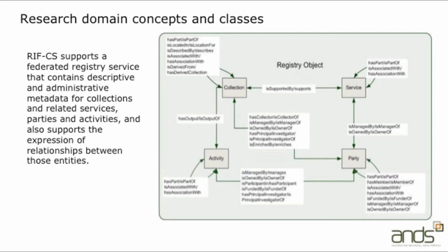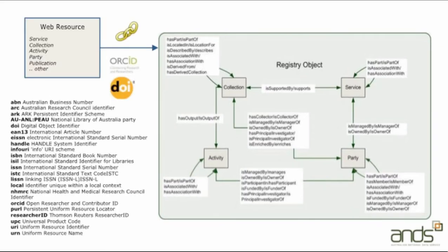RIFCS stands for the Registry Interchange Format for Collections and Services. RIFCS documents are in XML format and carry metadata from institutional metadata stores to the Collections Registry, where it can be stored and searched via Research Data Australia. It is a living and evolving standard, subject to annual review by the RIFCS Advisory Board, which is coordinated by ANS. Any changes approved by the board are usually implemented at the end of the year, and we have our next version of RIFCS due for release next month. RIFCS supports the expression of relationships between entities such as collections, services, parties and activities.